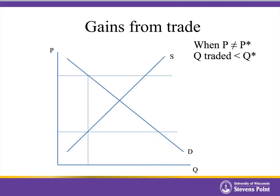Thinking about gains from trade: if we have a price that's not in equilibrium — suppose the price is below equilibrium — we end up with a shortage of the good, which naturally pushes the price up. If the price is below the equilibrium, a lower quantity is actually going to be traded. The rest of these consumers go home without being able to purchase the good because of the shortage. With that reduced amount of trading, we have a much smaller producer surplus and a funny-shaped consumer surplus.